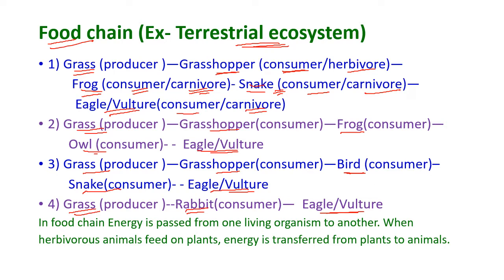In a food chain, energy is passed from one living organism to another — from one stage to another. When herbivorous animals feed on plants, the energy is transferred from plants to animals, and from herbivores to carnivores.